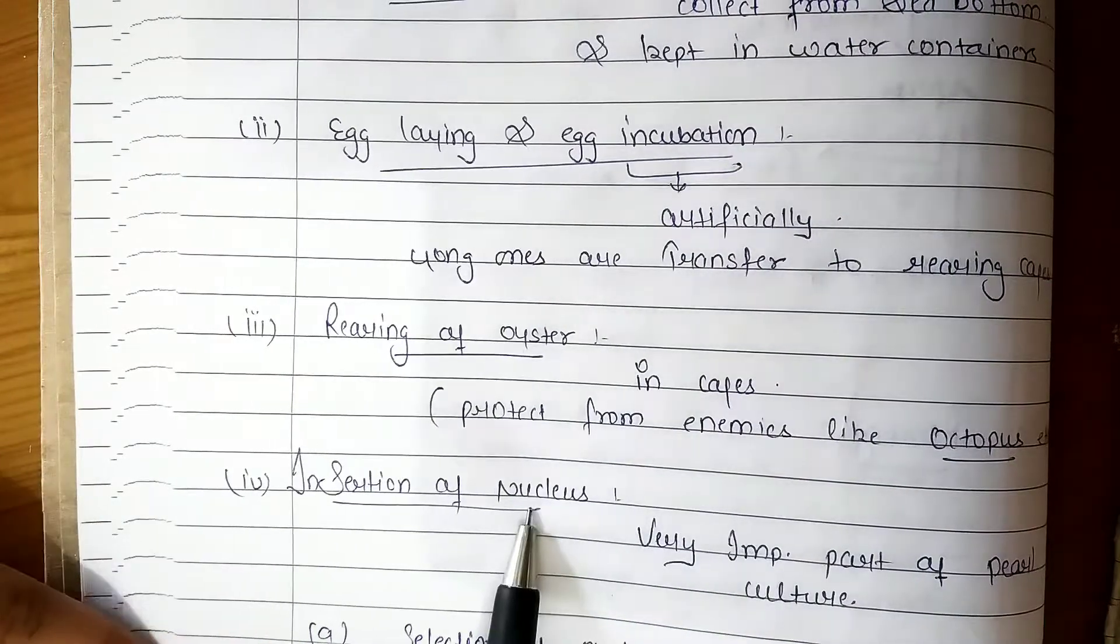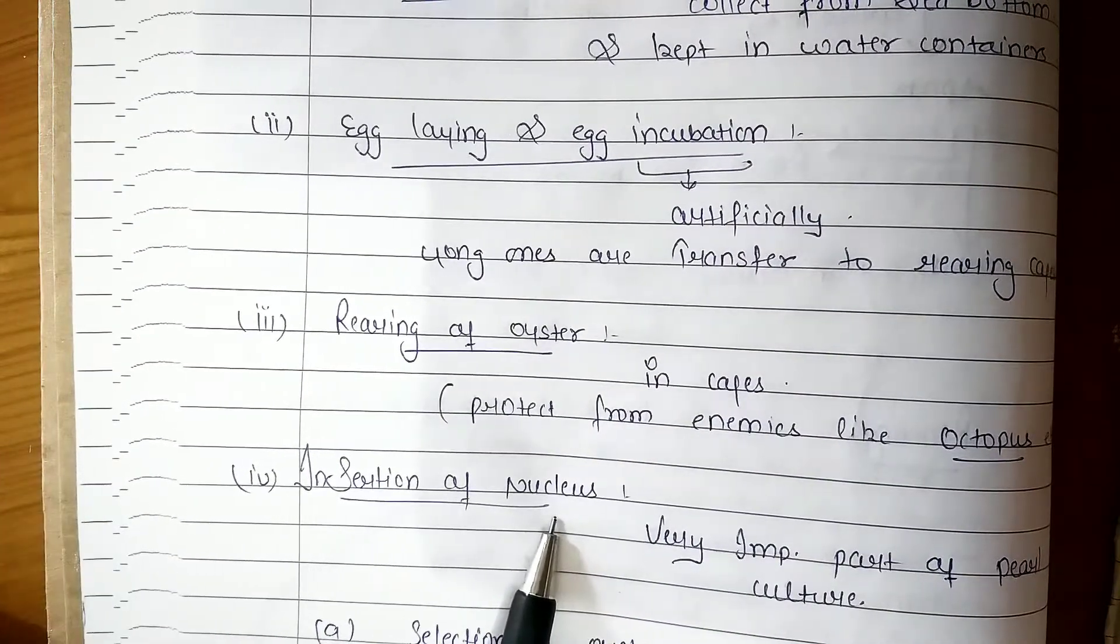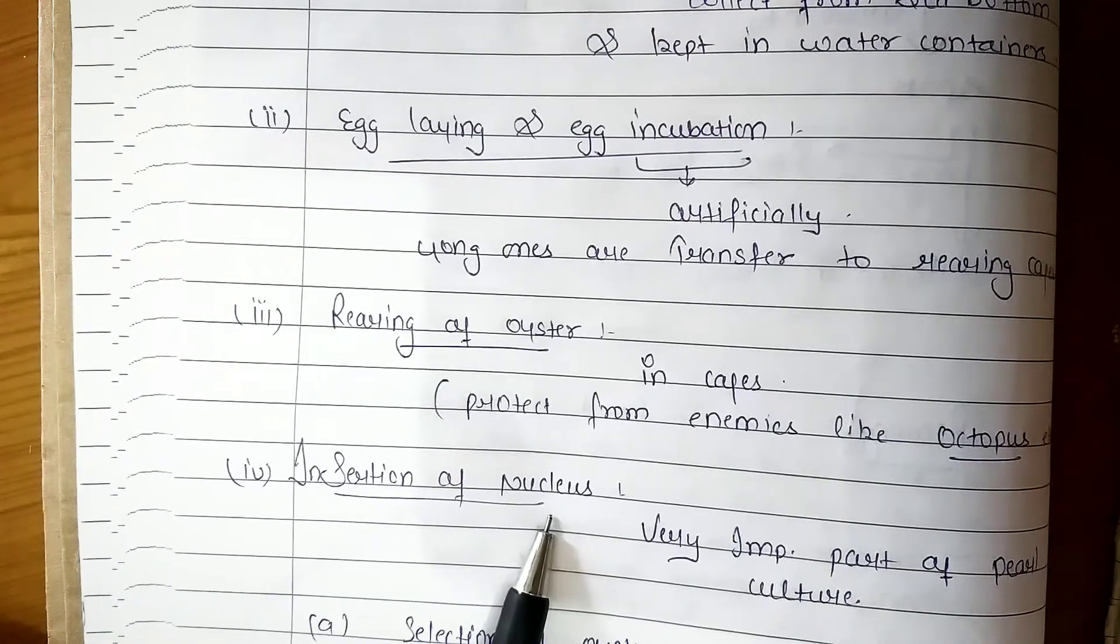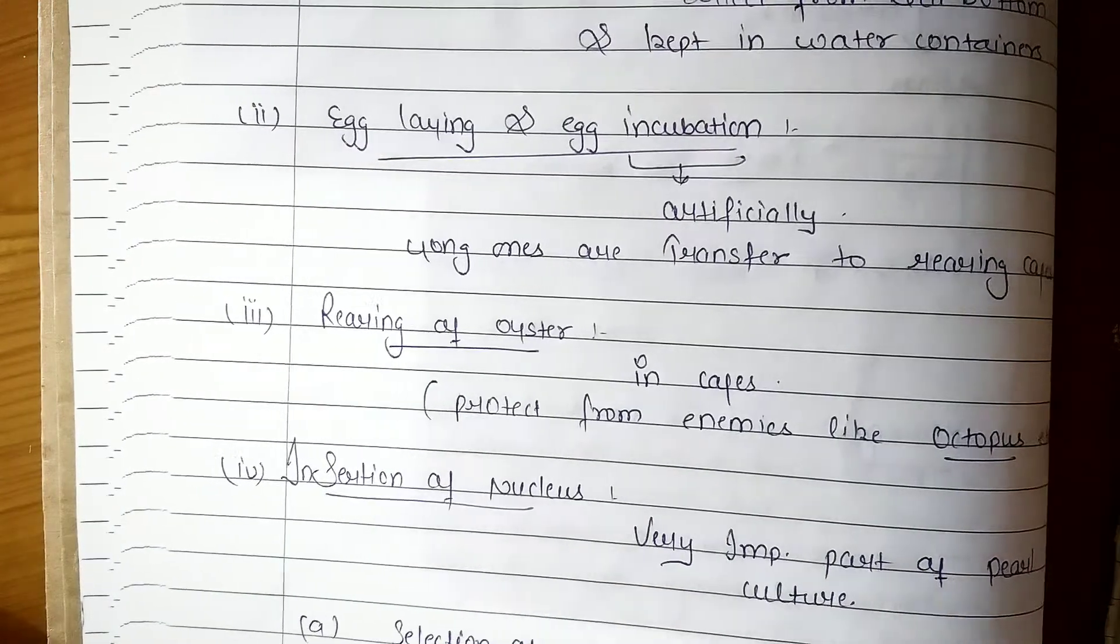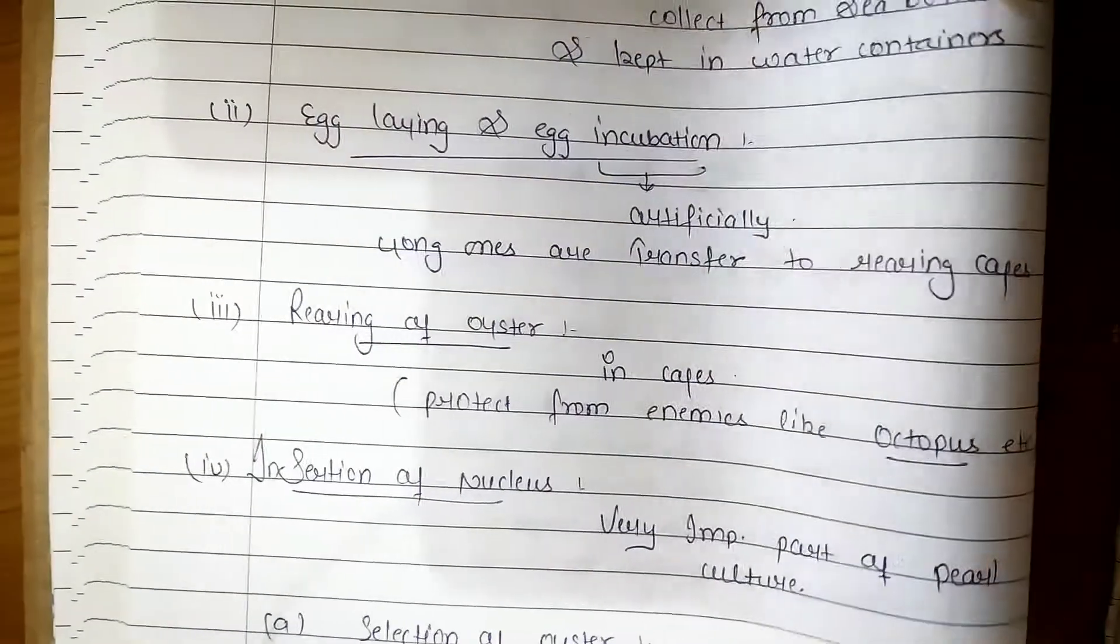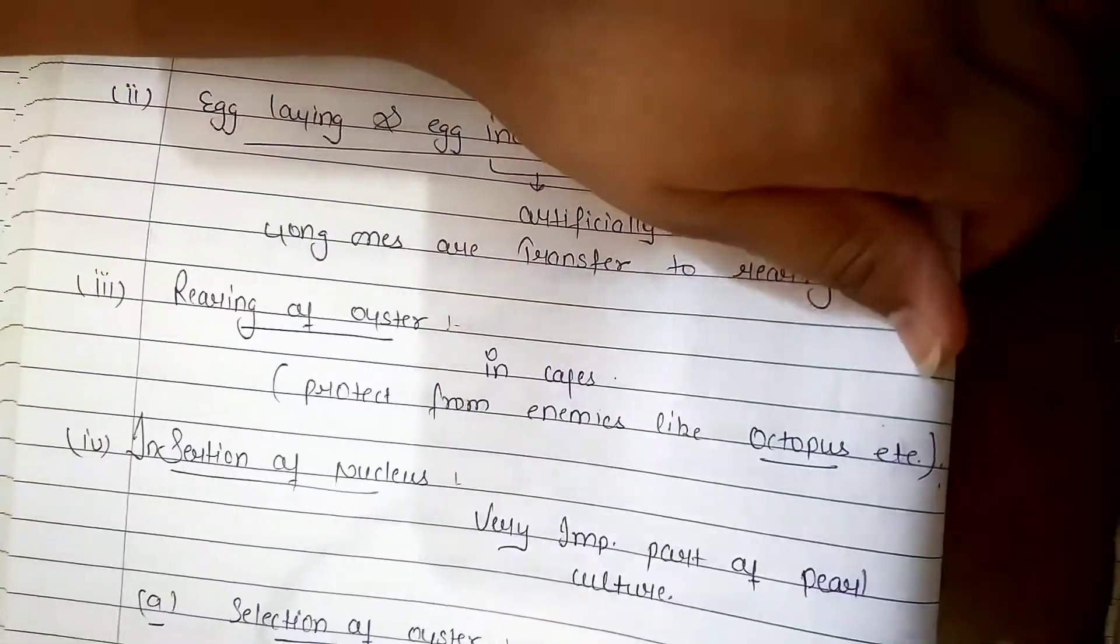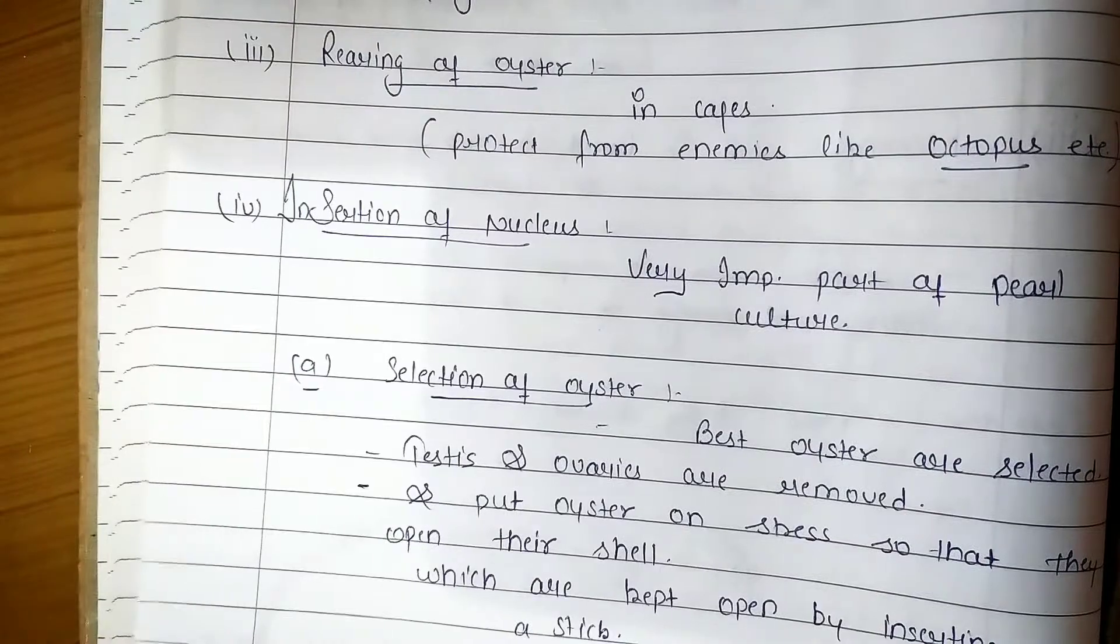Next step is pearl fisheries. This is the insertion of nucleus. This is the most important part of pearl culture. If we need the best pearl, we need to do this part, the nucleus insertion.